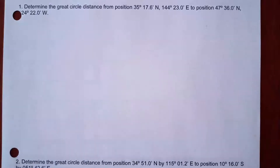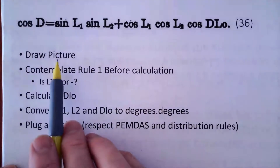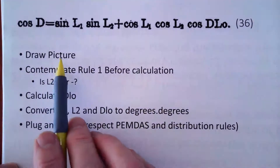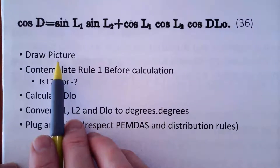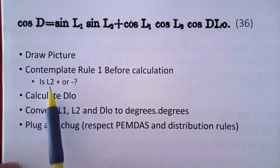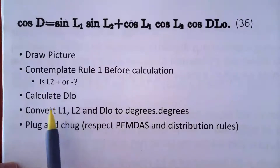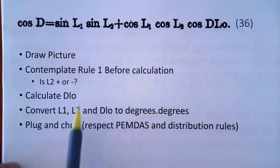This is what I'm going to do as I think about doing this problem. I'm going to draw a picture — really a picture for the longitude — so I understand if I'm supposed to add or subtract my longitude to get D-low. Then I'm going to contemplate whether or not I cross the equator. After that, I'll calculate my D-low and convert L1, L2, and D-low to decimal degrees so I can stick them into the formula, and then plug and chug.